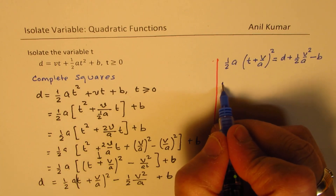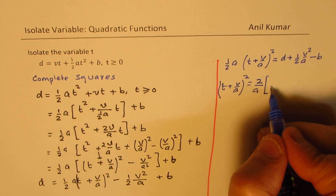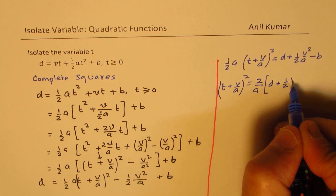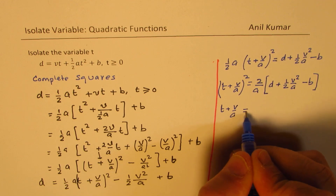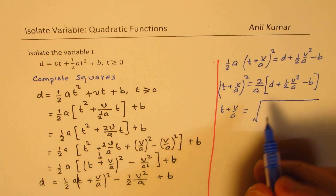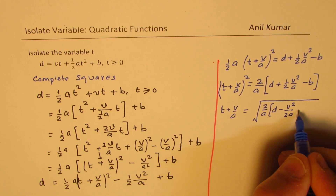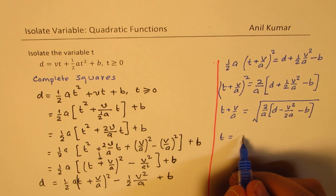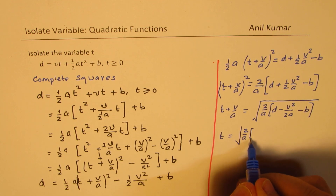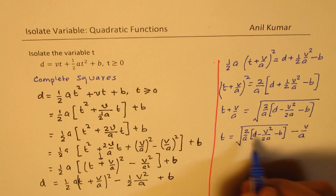So we'll rearrange. Bringing this constant term to the left, we are left with half a times (t plus v over a) whole squared equals to d plus half v squared over a minus b. Then (t plus v over a) whole squared equals to 2 over a times (d plus half v squared over a minus b). So taking the square root and moving v over a to the right, t equals to square root of 2 over a times (d minus v squared over 2a minus b), minus v over a. So in a way, we have isolated t. And you could always simplify this expression — it will remind you of the quadratic formula.